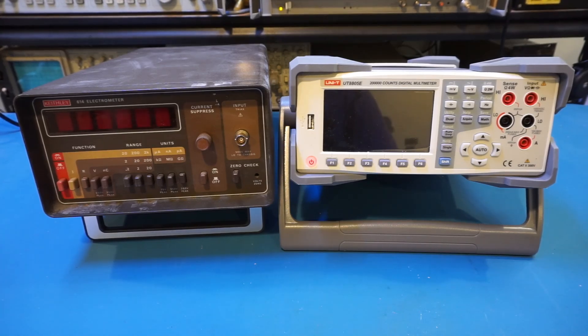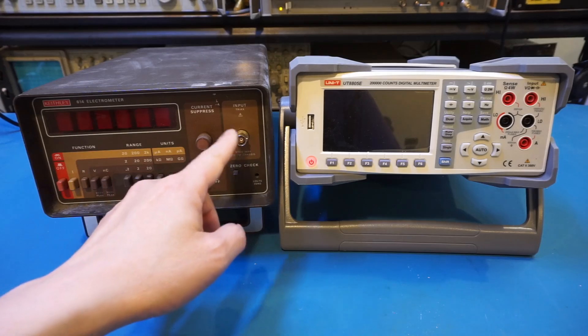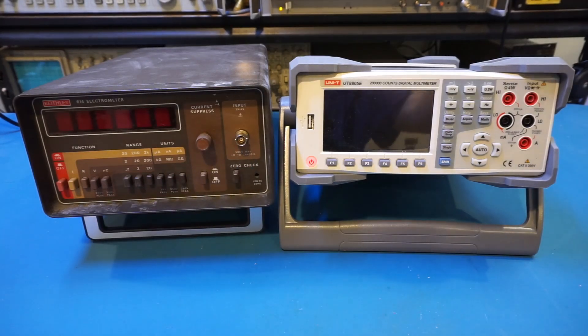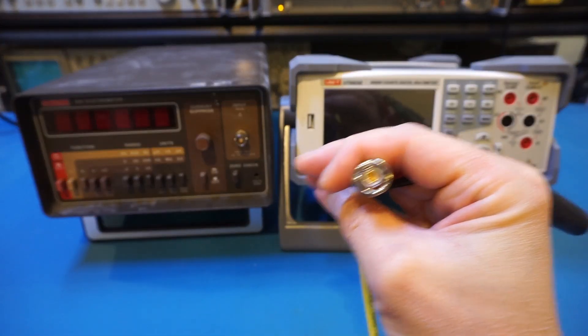Because of the high input impedance, the Keithley 614 uses a triax cable for the input. If you look at the connector here carefully, you will see this is not your traditional BNC. And the cable itself is not cheap. I think just for the triax cable itself, I paid more than $100.